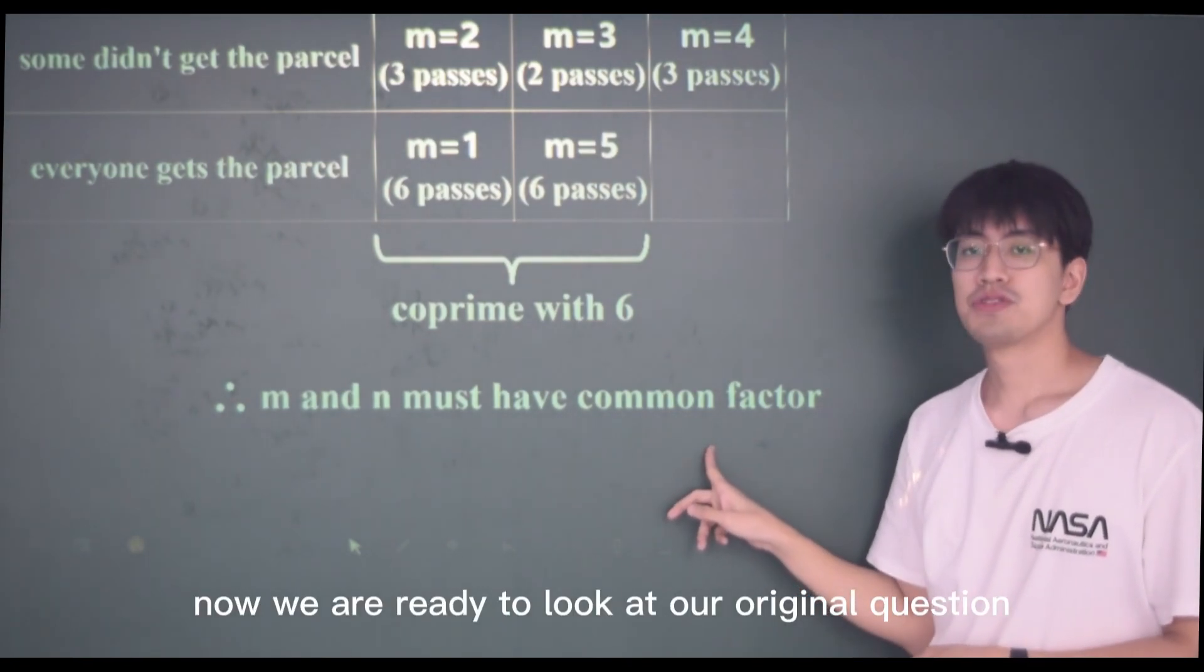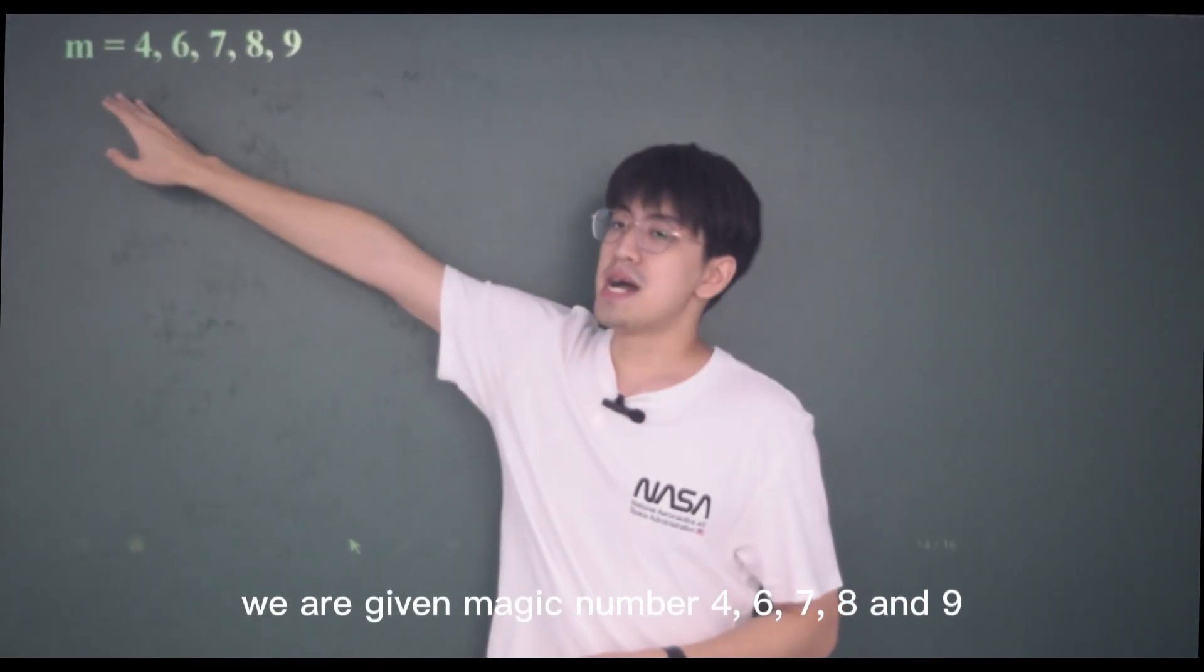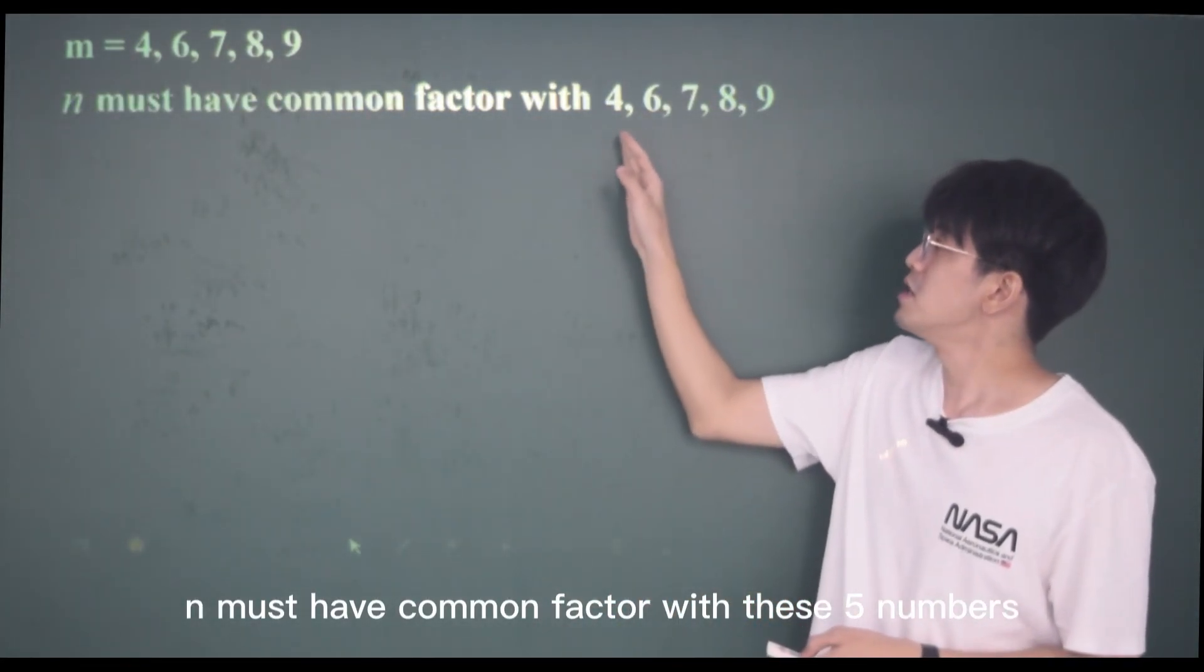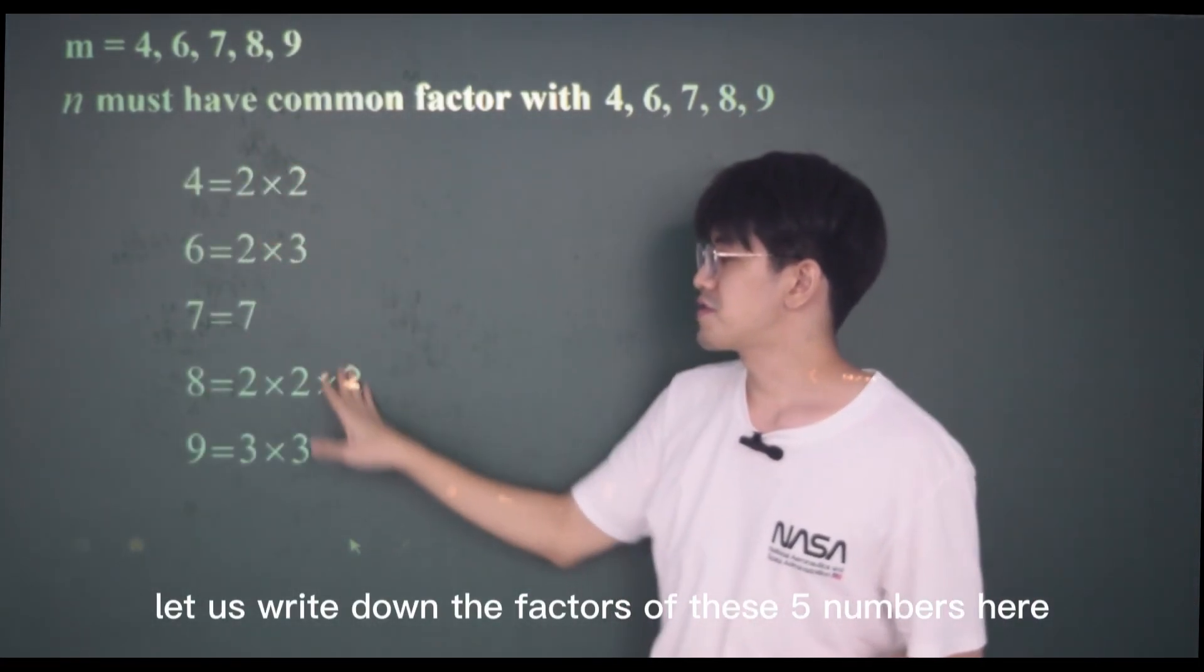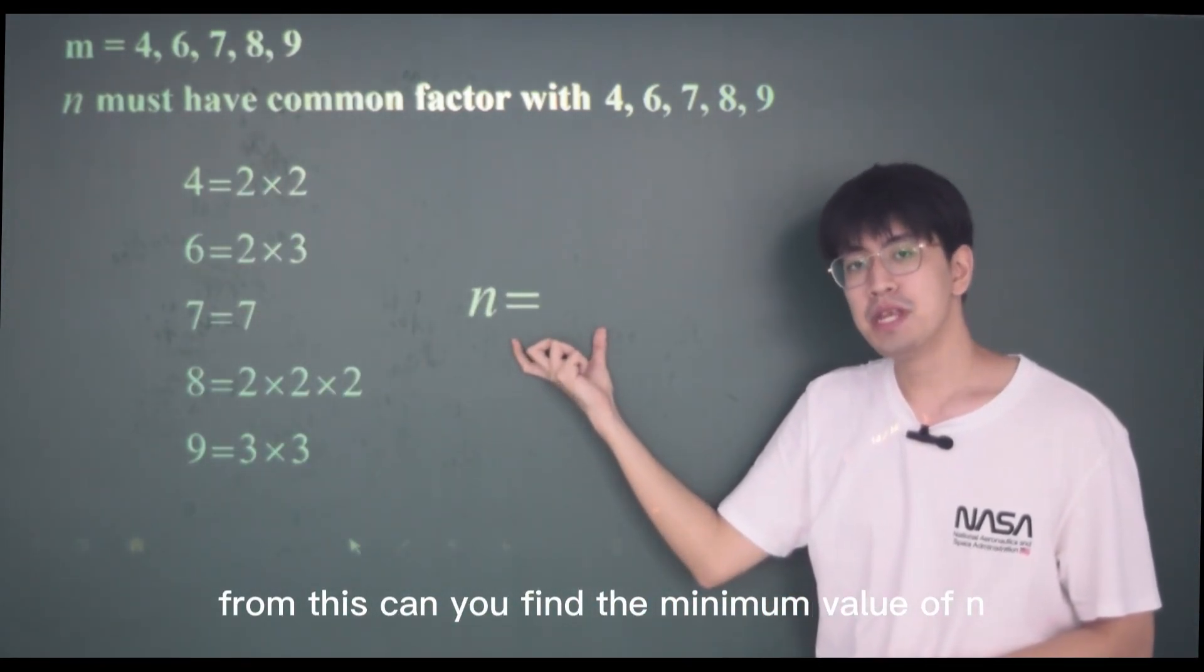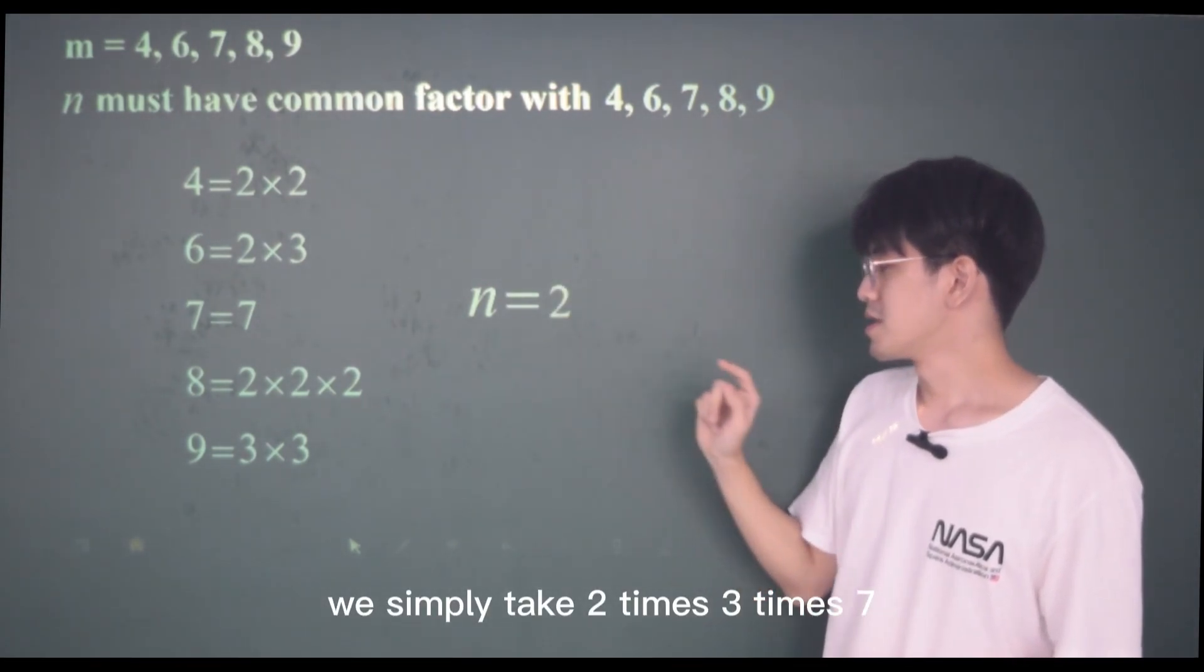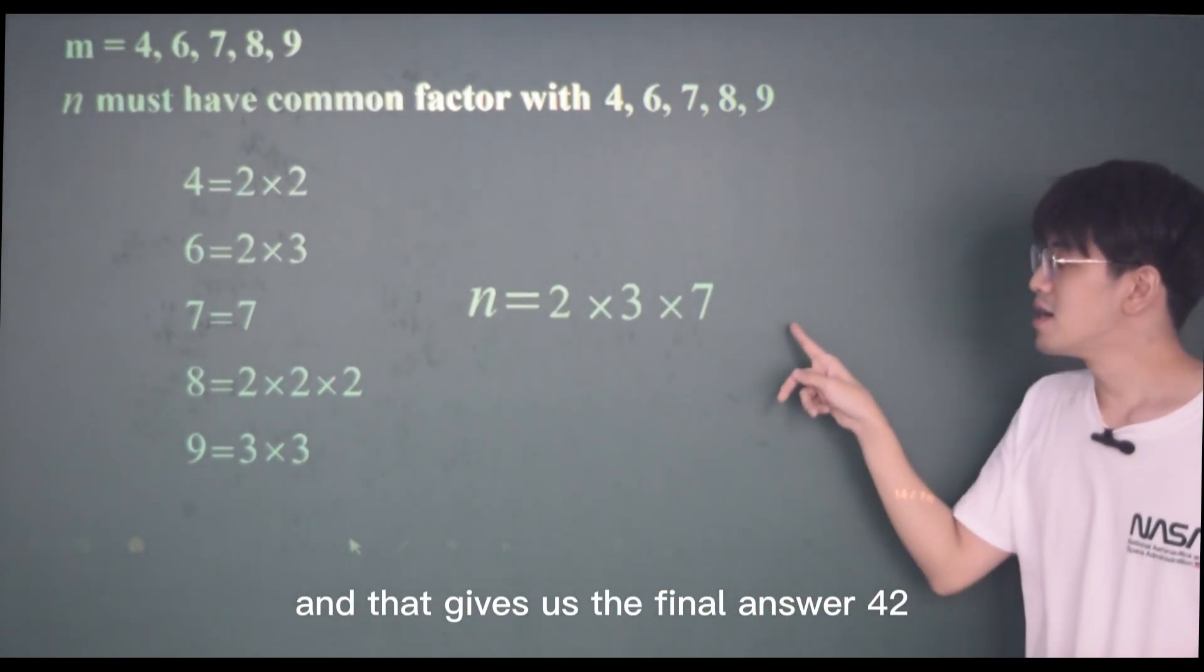Now, we are ready to look at our original question. We are given magic number 4, 6, 7, 8, and 9. And we know N must have common factor with these five numbers. Let us write down the factors of these five numbers here. From this, can you find the minimum value of N? You are correct. We simply take 2 times 3 times 7, and that gives us the final answer, 42.